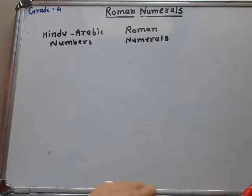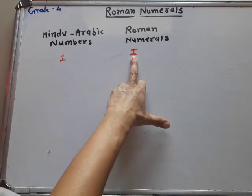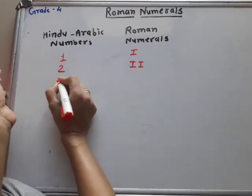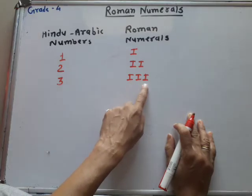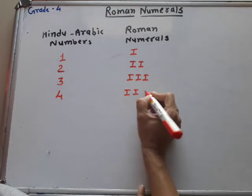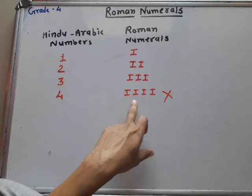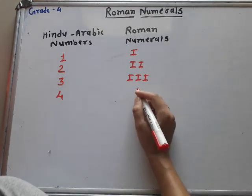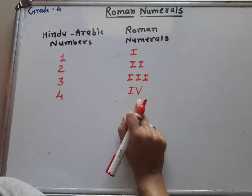Now let's write Hindu-Arabic numbers as Roman numerals. In Hindu-Arabic: 1 is written as I, 2 is II (1 plus 1), 3 is III (1 plus 1 plus 1). For 4, writing IIII would be wrong because we can only repeat a symbol 3 times. So instead we subtract from the greater number: 5 minus 1 equals 4, and we write I to the left of V — so 4 is IV.